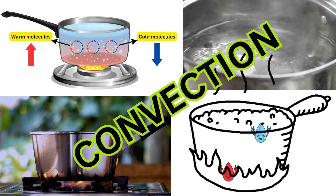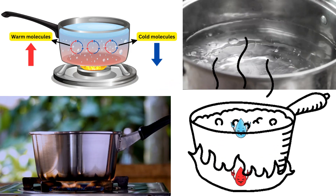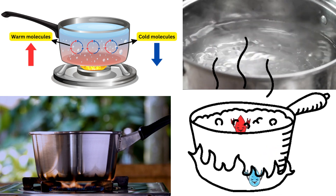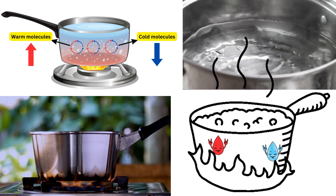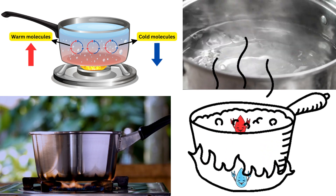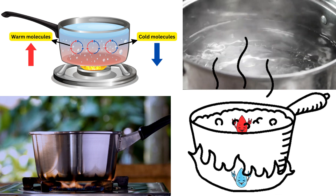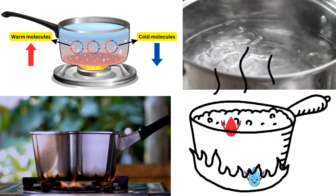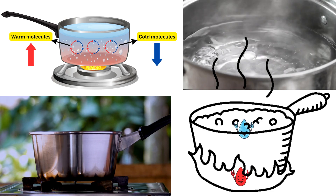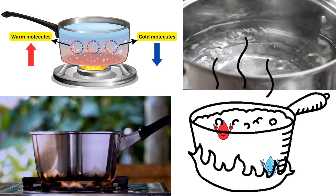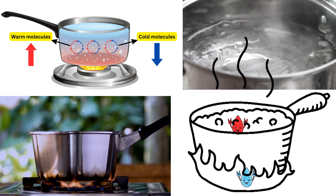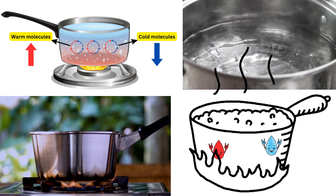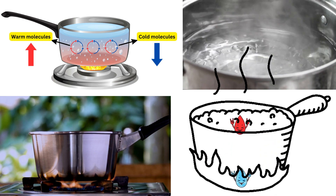Now, friends, let's move on to convection, which involves heat transfer through the movement of fluids. To understand this, let's think of a pot of boiling water on a stove. Have you ever noticed how the water near the bottom gets hotter fast? Well, friends, this is due to convection. As the water is heated, the hot molecules become less dense and rise to the top. Meanwhile, the cooler denser water sinks to the bottom.